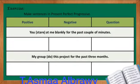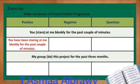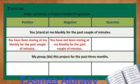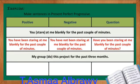For our exercise, make sentences in present perfect progressive. The first one: You stare at me blankly for the past couple of minutes. Stare is the verb. The correct positive statement is: You have been staring at me blankly for the past couple of minutes. The negative sentence is: You have not been staring at me blankly for the past couple of minutes. And the question is: Have you been staring at me blankly for the past couple of minutes?